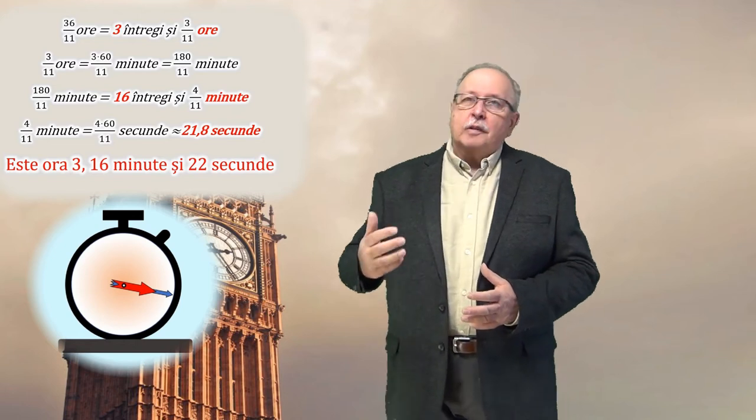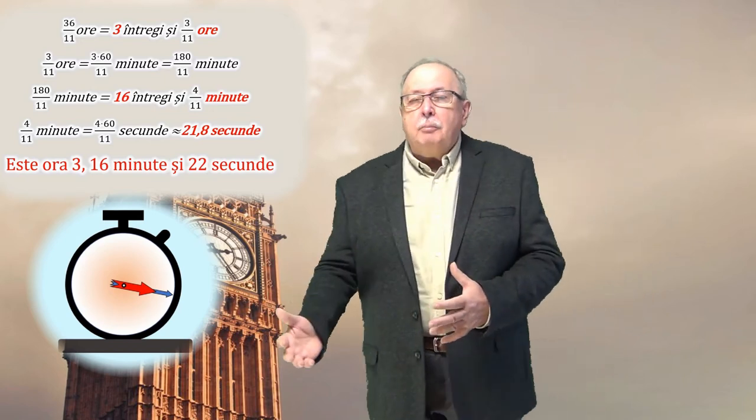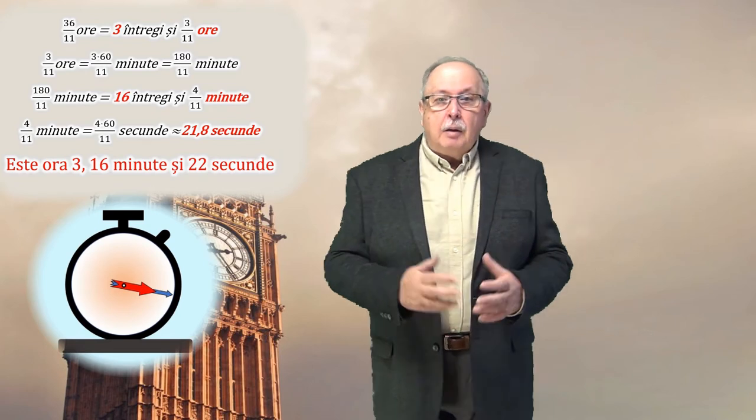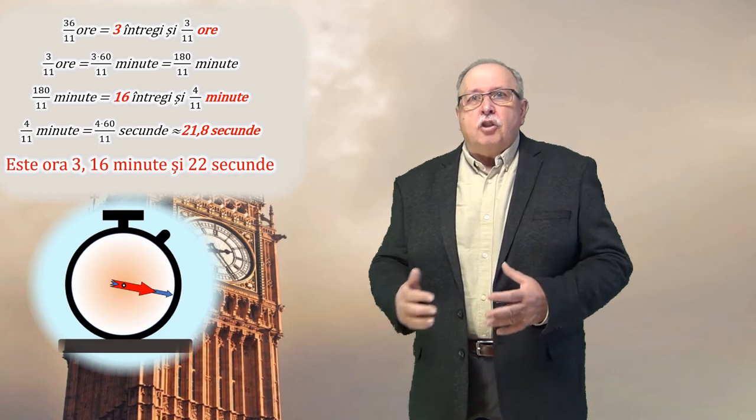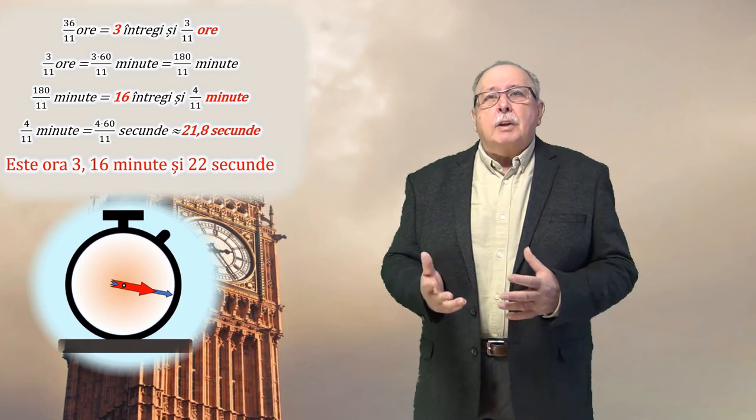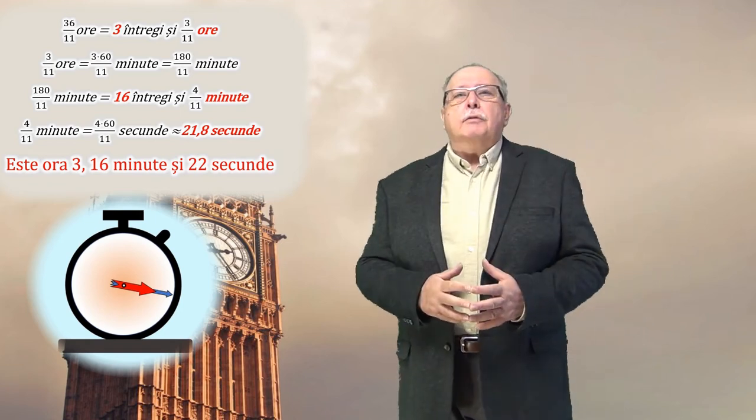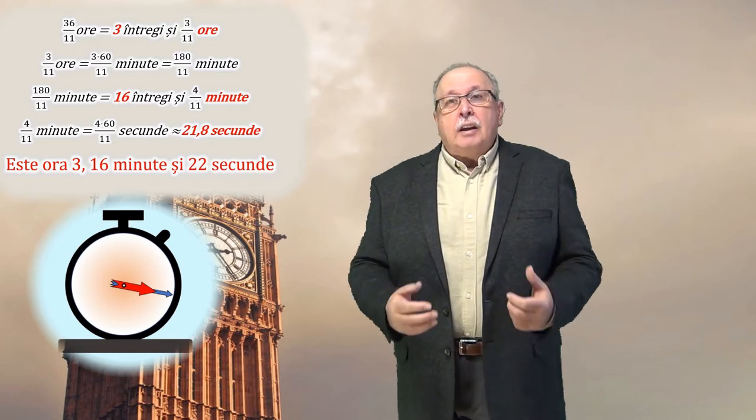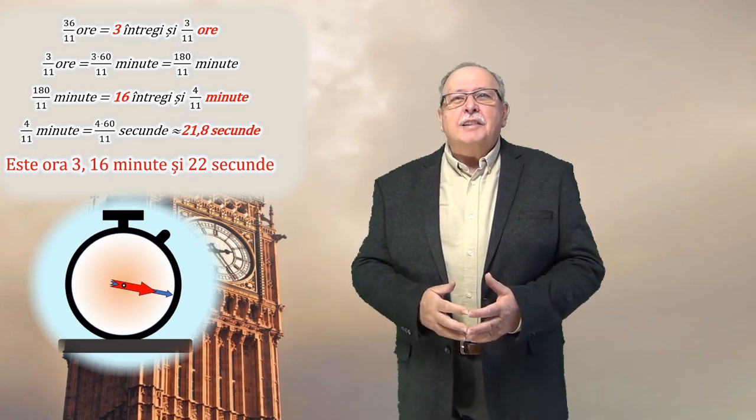Păi a rămas rest patru supra unzprezece minute, care înseamnă câte secunde? Păi de șaizeci de ori mai mult. Pentru că într-un minut sunt șaizeci de secunde. Adică înseamnă patru ori șaizeci supra unzprezece. Adică douăste patruzeci supra unzprezece secunde. Dacă facem împărțirea, vedem că asta înseamnă aproximativ 21,8 secunde. Adică aproximativ douăzeci și două de secunde. Și înseamnă că ora este trei șaizeci minute și douăzeci două de secunde.